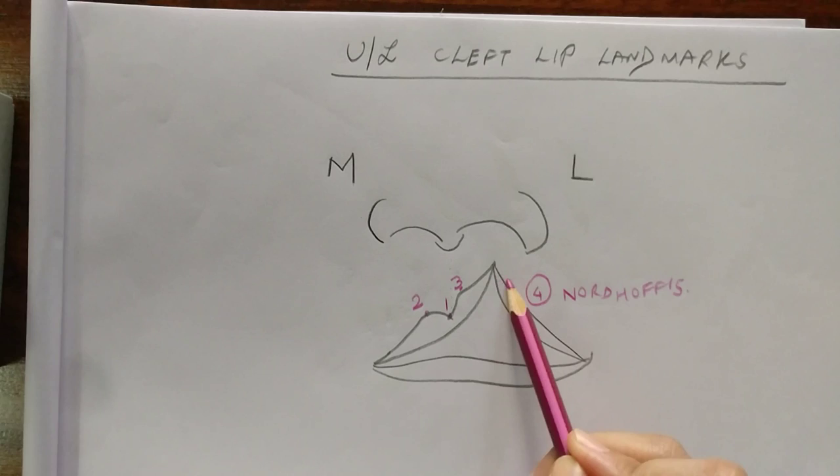So point 4 is actually marked where the vermilion starts to thin or there is maximum thickness of the white roll.